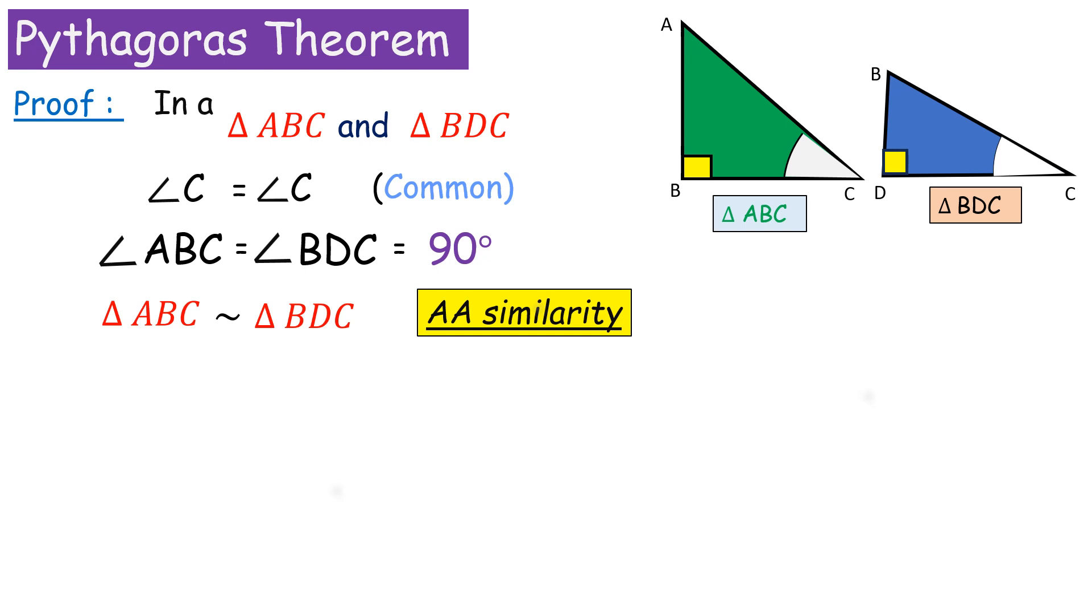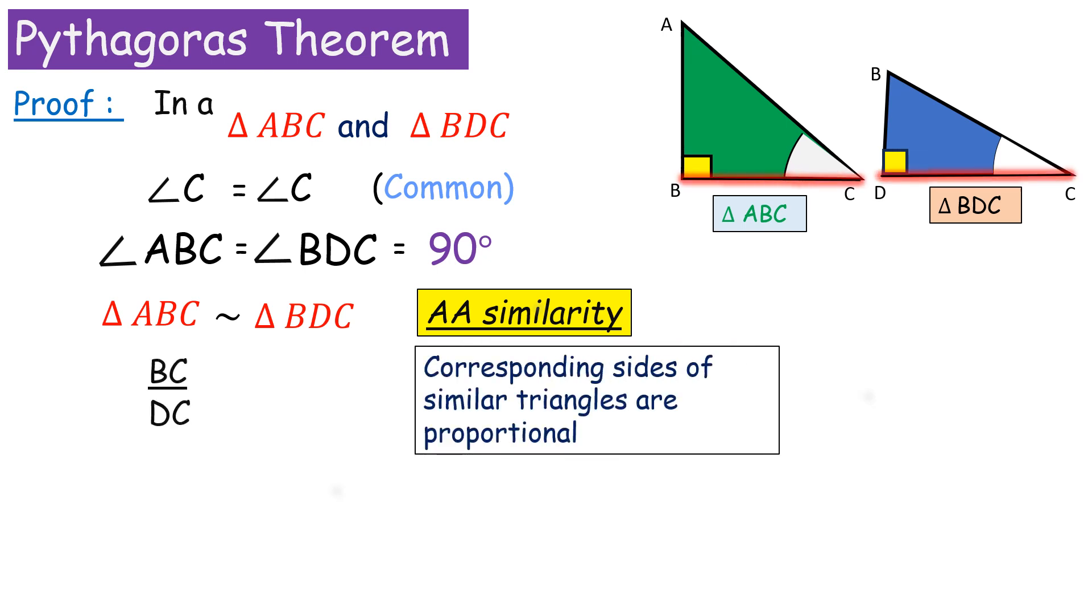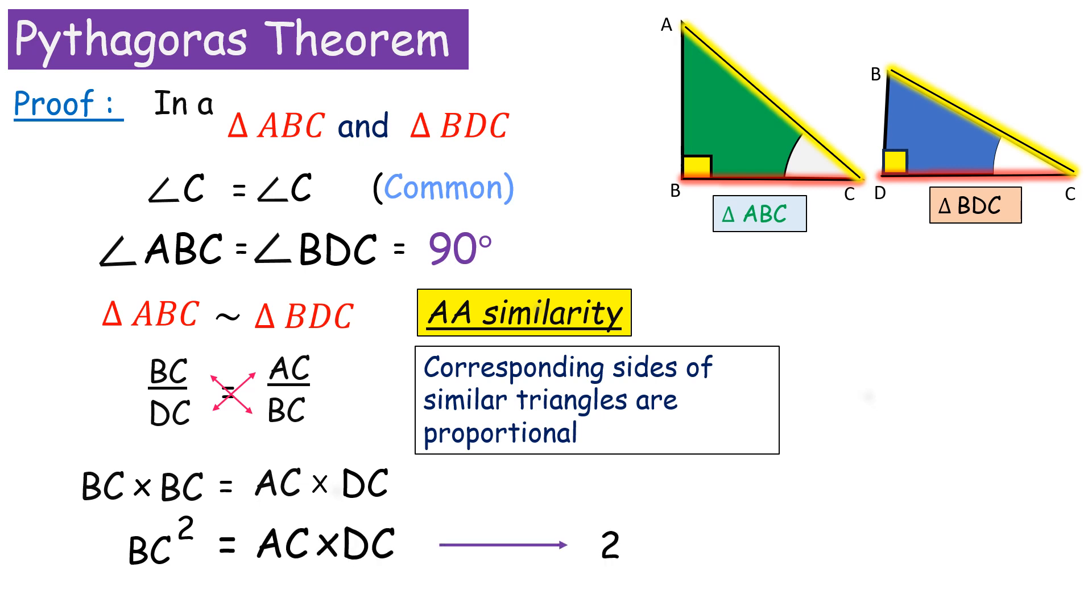Similarly, their sides would be proportional. BC by DC is equal to AC by BC. Cross multiply, we get BC² is equal to AC into DC. This is equation 2.